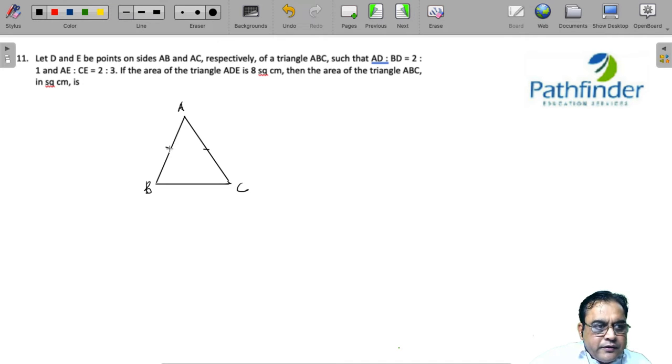this is E. So I join DE. You are given AD to BD is 2 to 1, and AE to CE is 2 to 3. Now the area of triangle ADE is 8 square centimeters.